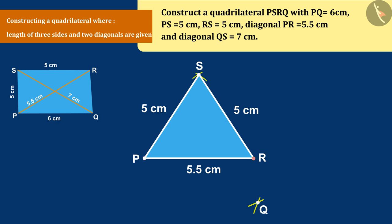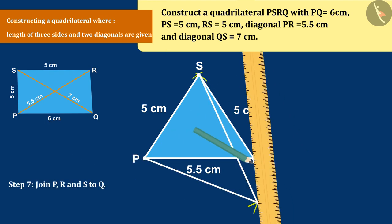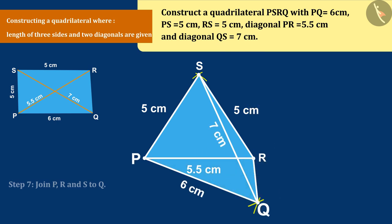Step 4. Combine PQ, RQ and QS. By joining PQ, RQ and QS, we get a quadrilateral PSRQ. This is a desired quadrilateral that we had to construct.